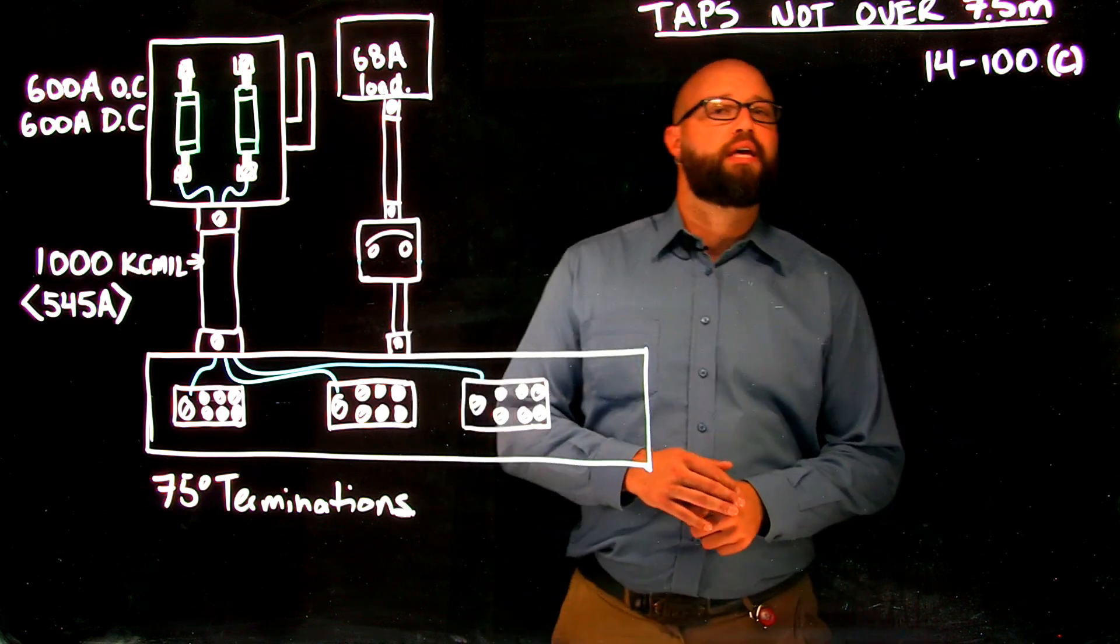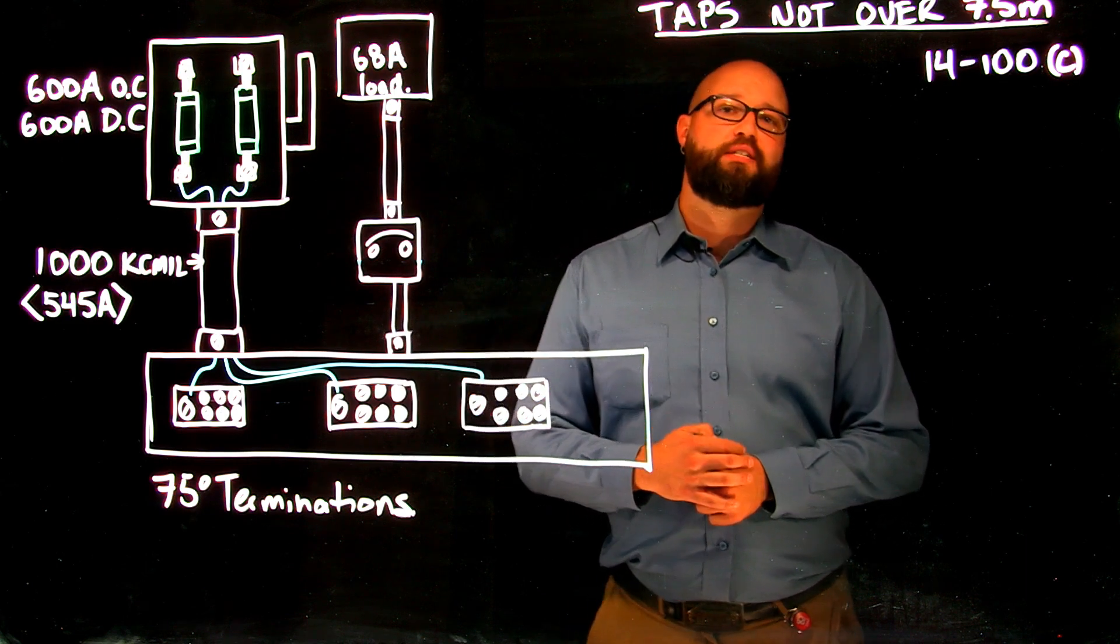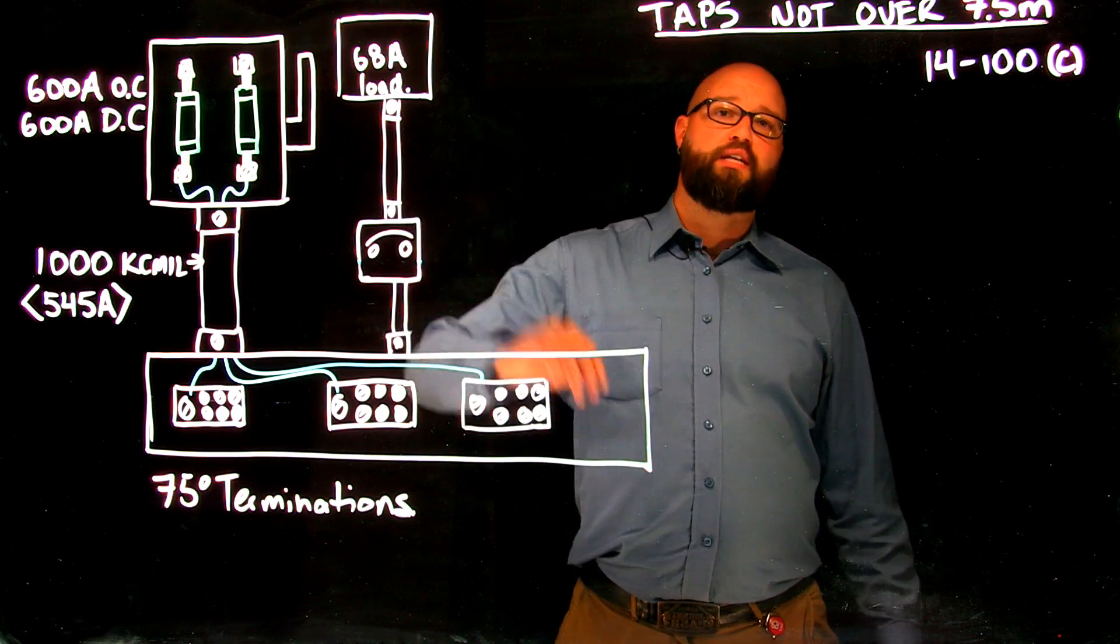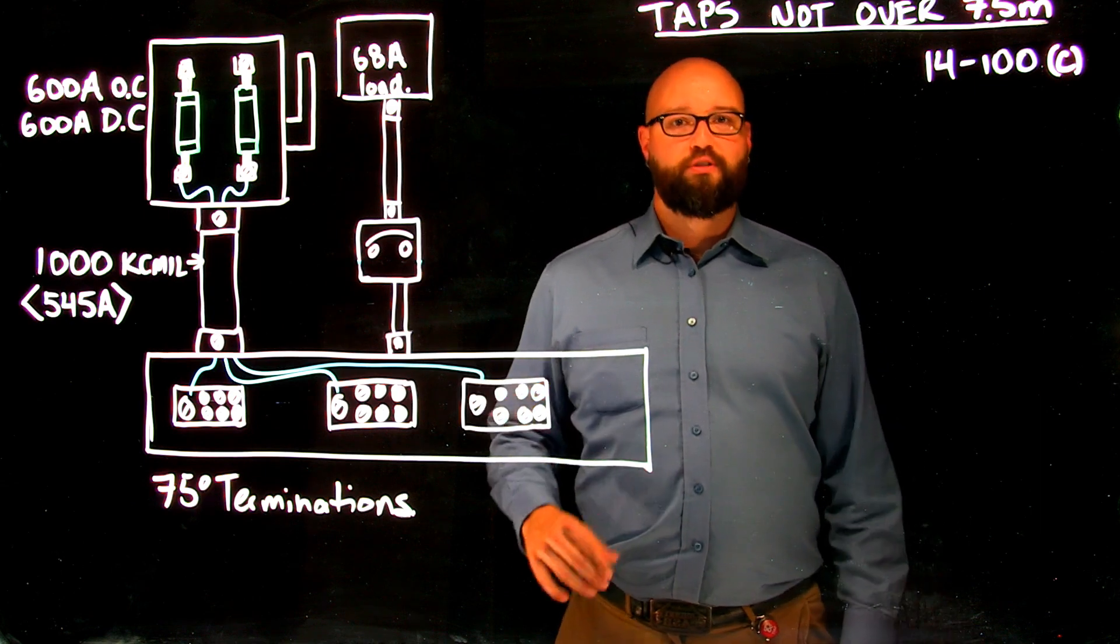First thing I want to point out before we get into this is that by the rule 14100 we are not allowed to downsize our conductor without overcurrent protection unless it is on the downstream side of an overcurrent device. There are exceptions to the rule.